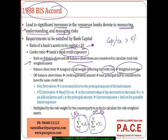The weighted average of all balance sheet items is computed to find the risk-weighted assets. For off-balance sheet items, a credit equivalent amount (CI) is computed — a loan principal considered to have the same credit risk as the off-balance sheet item. For non-derivative items, a direct conversion factor is applied to the principal amount to derive the risk weight of that particular instrument.